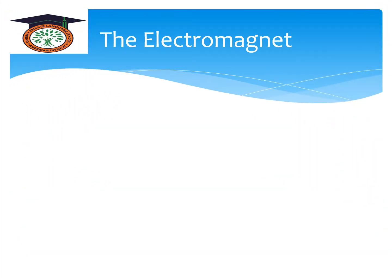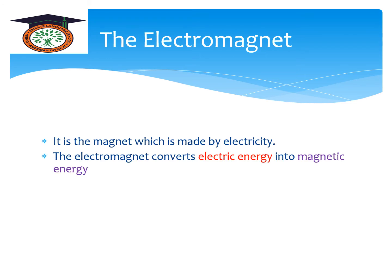The electromagnet is the magnet which is made by electricity. The electromagnet converts electric energy into magnetic energy. The word 'electro' comes from electric, and 'magnet' refers to magnetic — so the electromagnet converts electric energy into magnetic energy.